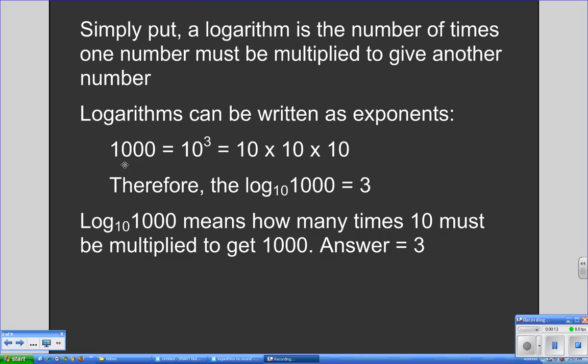For example, the number 1,000 can be written as 10 to the third, which means that you need three 10s, 10 times 10 times 10, to equal 1,000. Therefore, the log base 10 of 1,000 equals 3. In other words, the log base 10 of 1,000 simply means how many times you must multiply 10 to get 1,000.